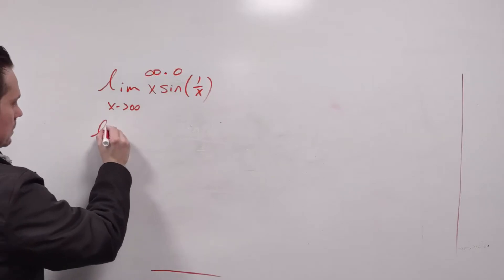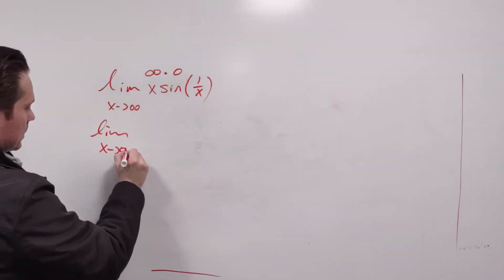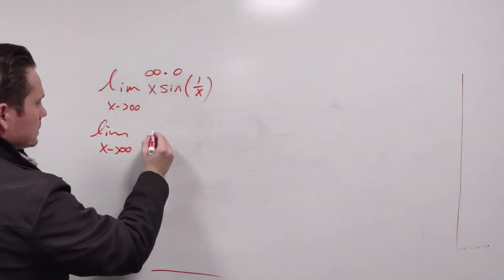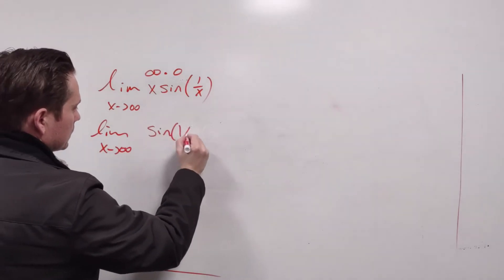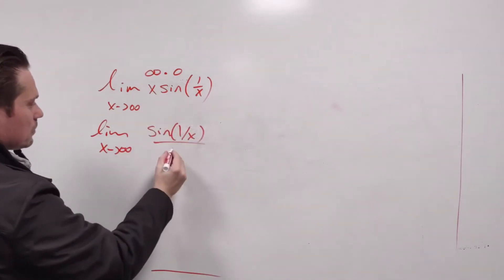That means we have to do the following. We can say the limit as x approaches positive infinity, and then we write this as sine of 1 over x, and then you divide that by 1 over x.